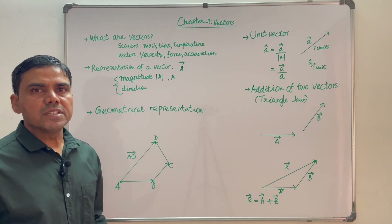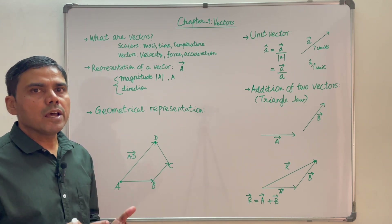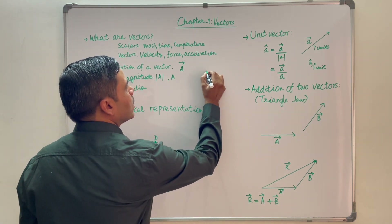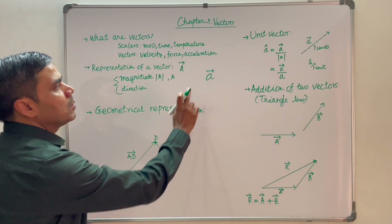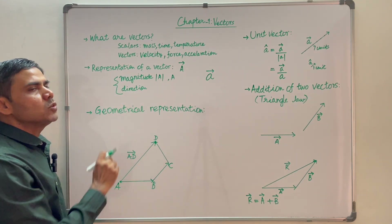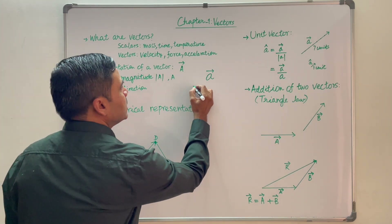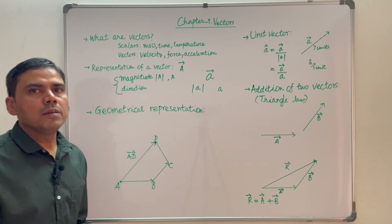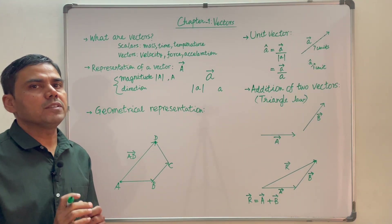A vector is represented by a letter — let's say A — with an arrow over it. The arrow points from left to right. The magnitude of a vector is represented by either mod A or simply A. Magnitude is a positive scalar; it is always positive.